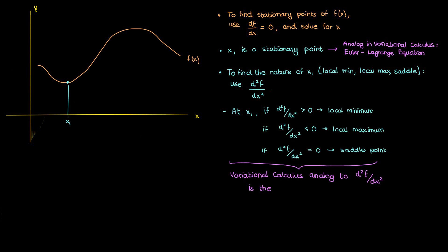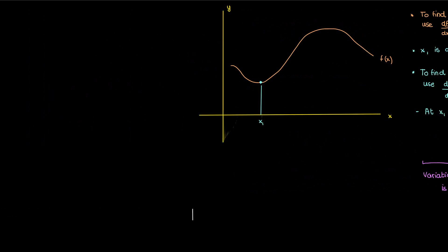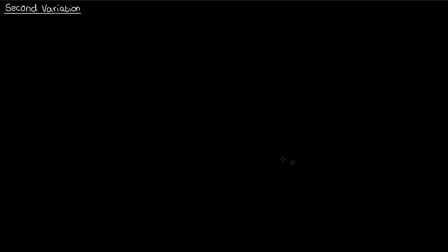Now the main purpose of this video is to determine the calculus of variations analog to the second derivative. I want to develop a quantity which I'll call the second variation, and I want to use this quantity to tell me whether the stationary function I find from the Euler-Lagrange equation locally maximizes or minimizes the functional.